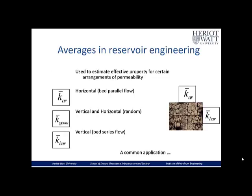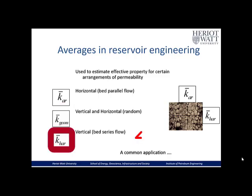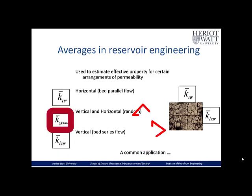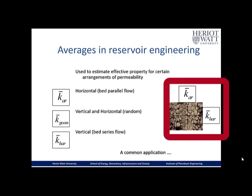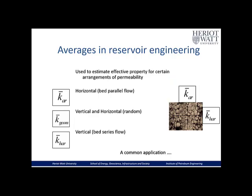The way we use these averages in reservoir engineering most commonly is: the arithmetic average for horizontal bed parallel flow, the harmonic average for vertical bed series flow, and the geometric average for flow both in the vertical and horizontal direction when the system is totally random. On the right-hand side there is an inset showing that when rocks are layered vertically, you'd use the harmonic average in the horizontal direction and the arithmetic average in the vertical direction.